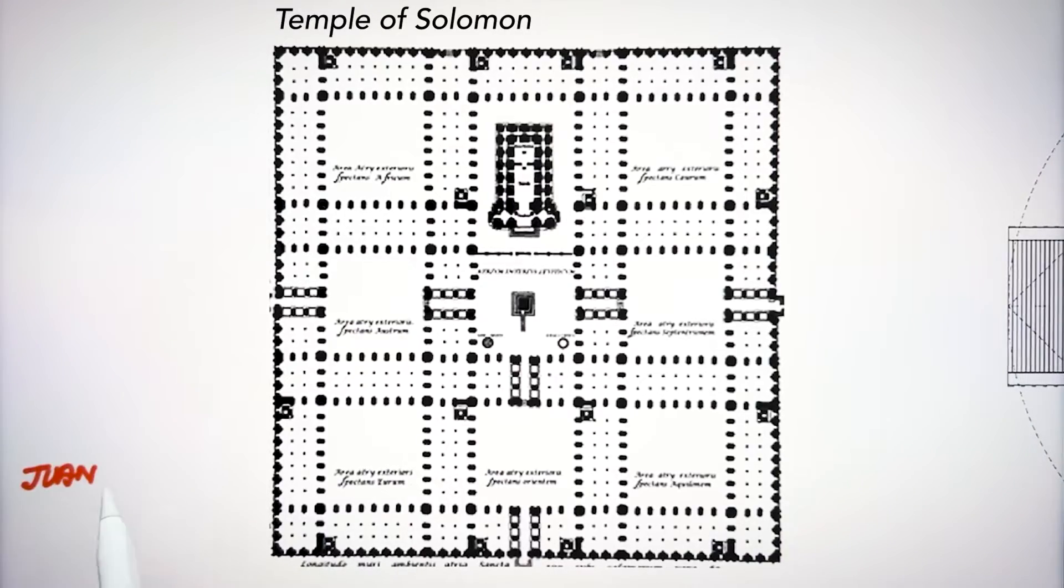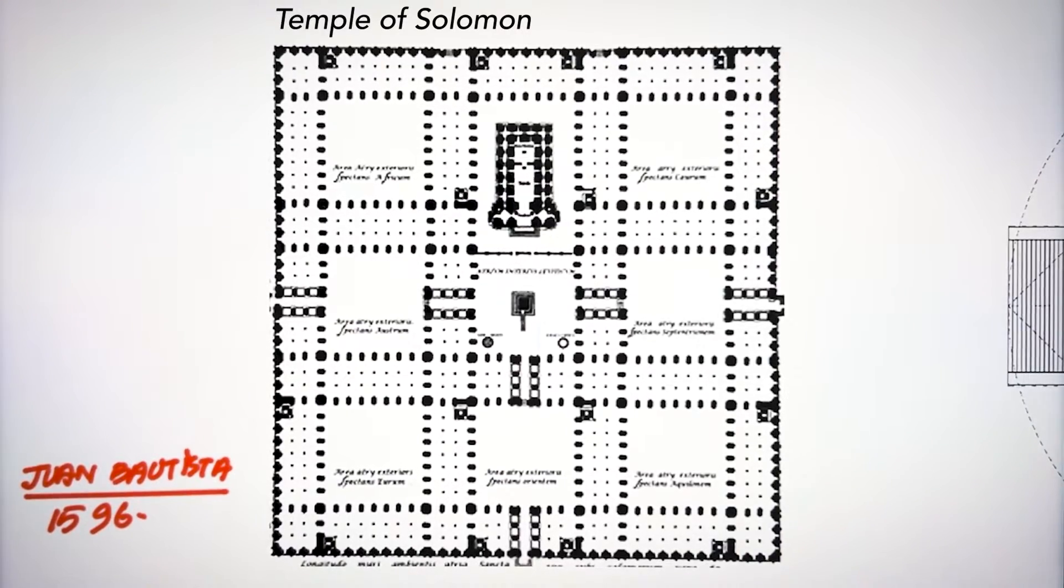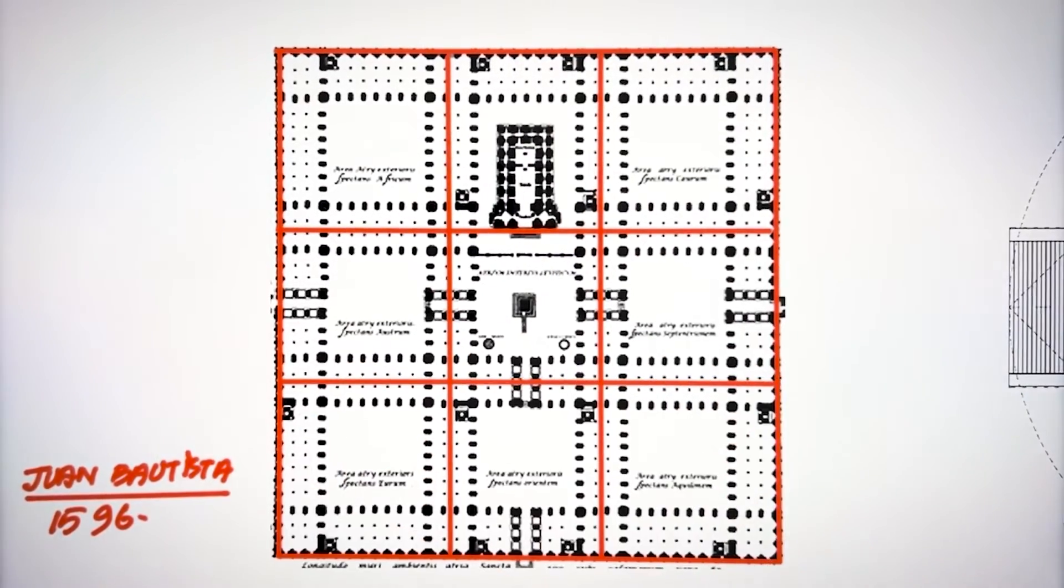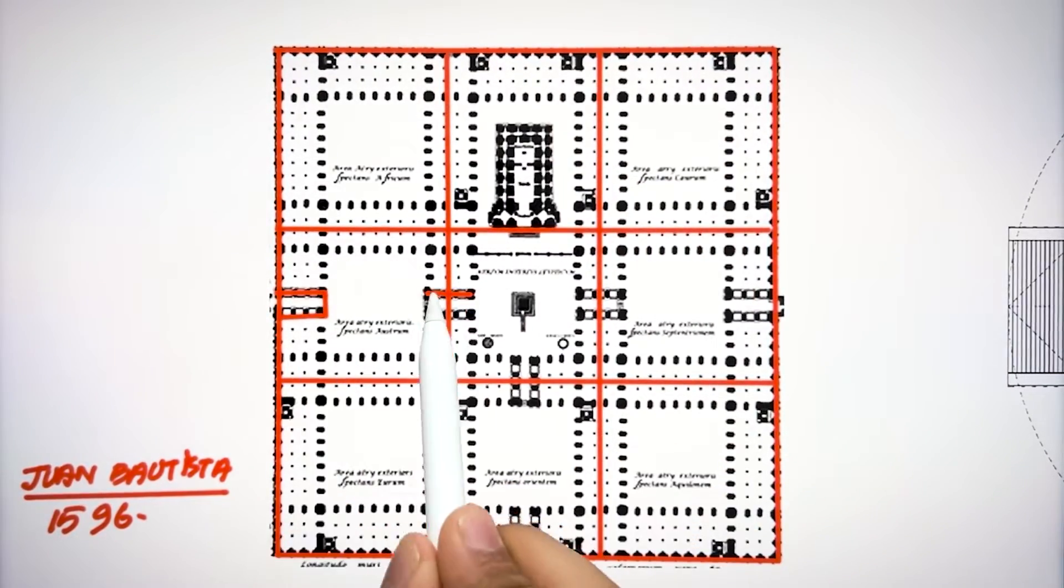So we created our rules to understand the nine grid concept. Now let's try to understand how historically the great masters of architecture have used these principles into their design. The first project we will discuss is the Temple of Solomon, reconstructed by John Bautista in the 17th century, which follows the same principle of nine grid system and the Solomonic order of design.